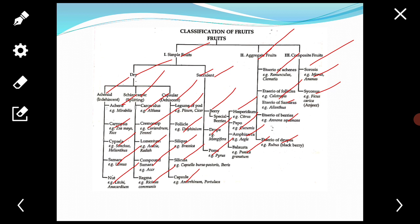Syconus: it develops from a hypanthodium type of inflorescence. At maturity, female flowers develop into small achenes. The hollow receptacle becomes fleshy, and the entire fruit ripens into a false composite fruit. Example: Ficus carica, fig.